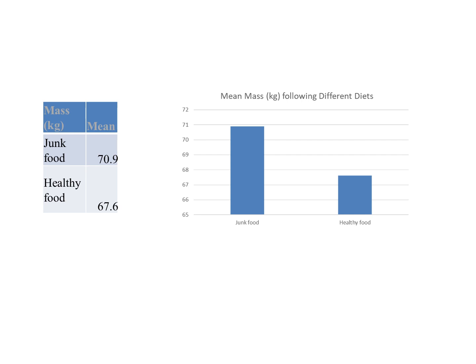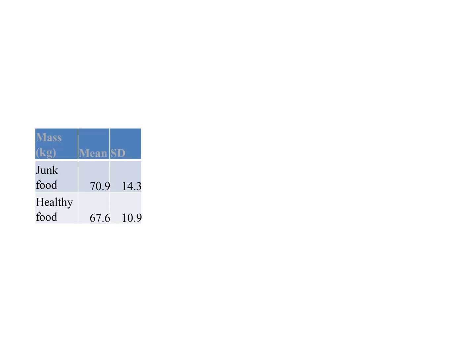Take a moment to calculate the standard deviation of the data for the junk food group and the healthy food group before moving on. You should find very high standard deviation values, indicating a massive difference between the repeats that contributed to each mean — which suggests the data isn't actually that repeatable.